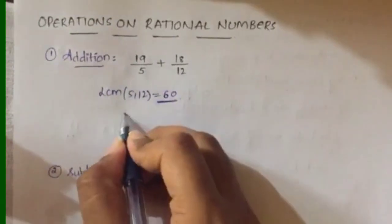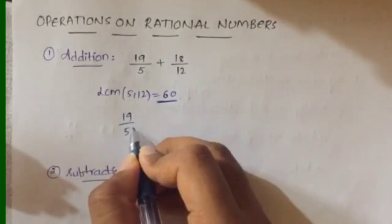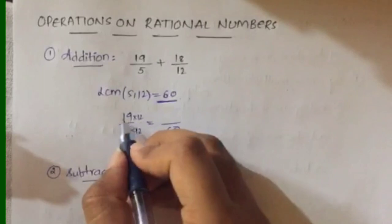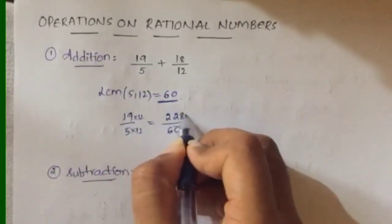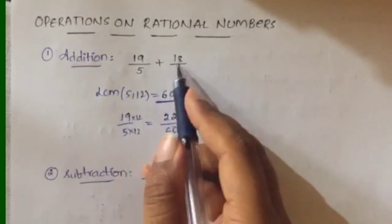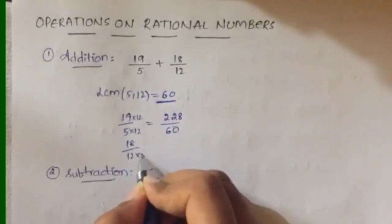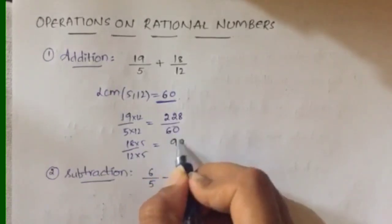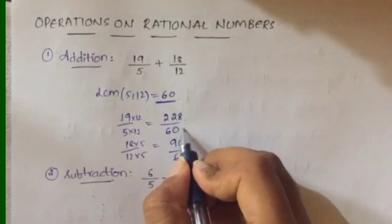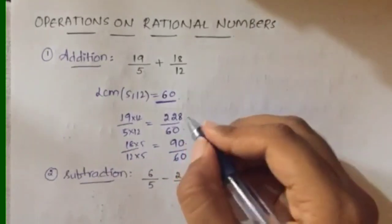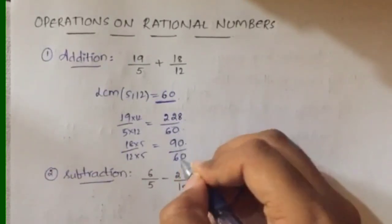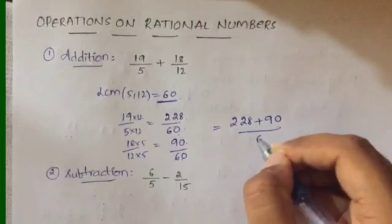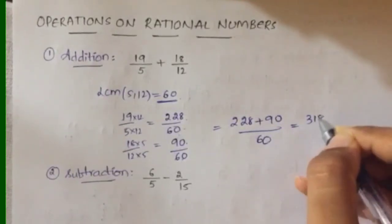So first find the LCM of the denominators — LCM of 5 and 12 — that is going to be 60. For 19/5, you multiply by 12 to make 5 into 60, so you also multiply 19 by 12, giving 228. So that's 228/60. For 18/12, you multiply by 5 to get 60, so you also multiply 18 by 5, giving 90. So that's 90/60. Now add: 228/60 + 90/60.